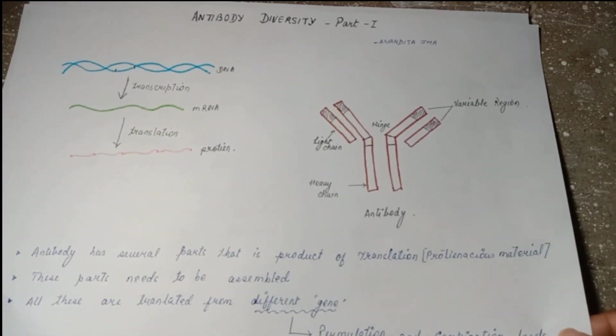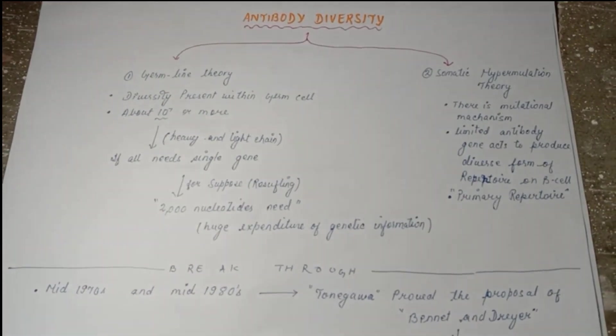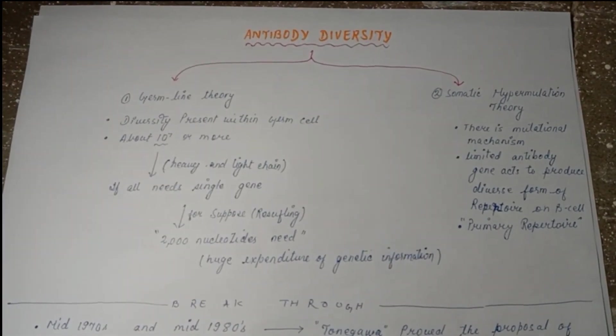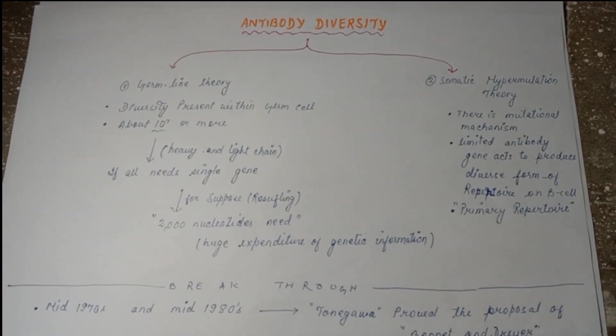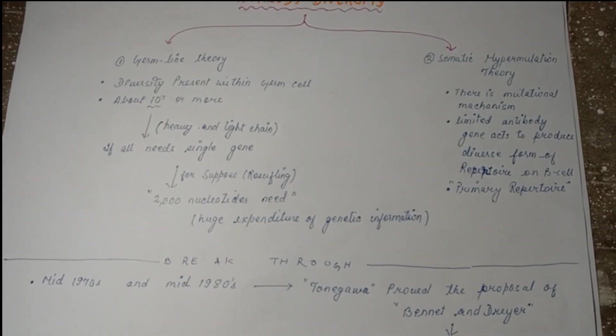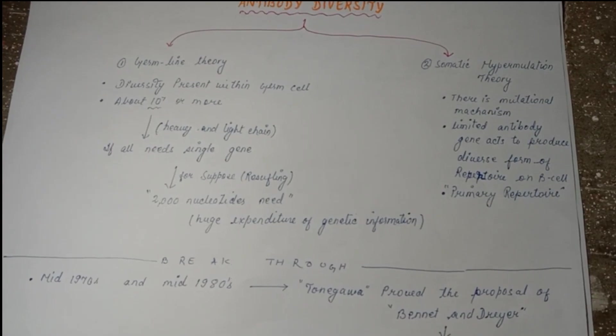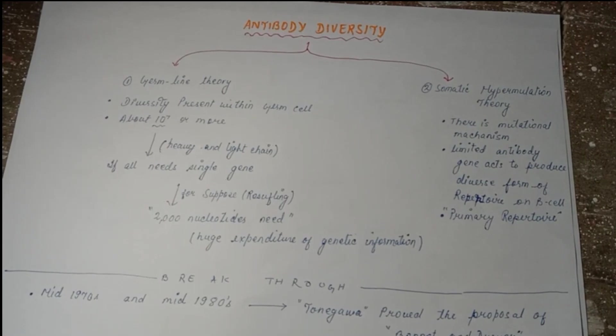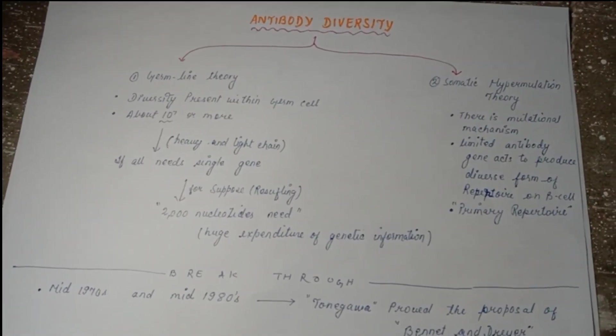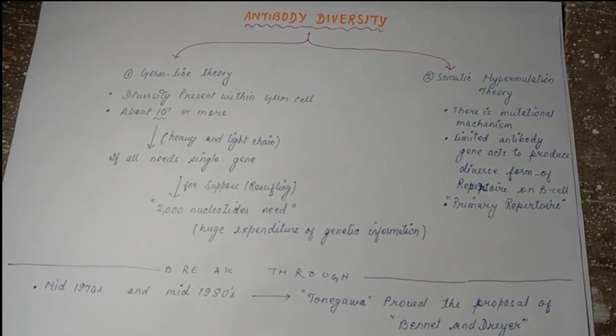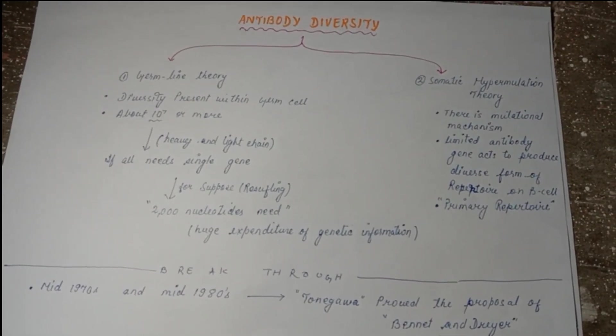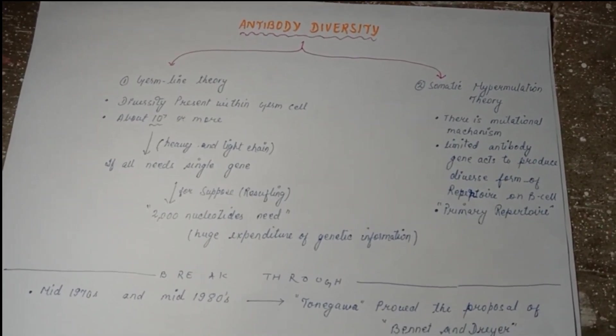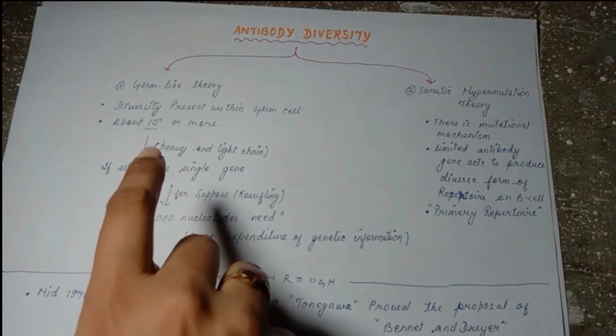This permutation and combination makes the antibody diversity. For antibody diversity, there are two theories. One is the germline theory and another is the somatic hypermutation theory. When we talk about germline theory, it was widely accepted initially, but later on we found the explanation was not so much possible.